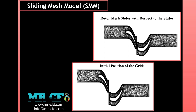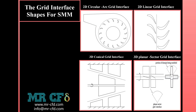The grid interface cannot be on the edge of any part of the rotor or stator. During calculations, the cell zones slide or translate relative to one another along the grid interface in discrete steps. The grid interface and associated interface zones can be any shape, provided that the two interface boundaries are based on the same geometry. Figure 1 shows a linear grid interface and Figure 2 shows a circular arc grid interface. If extruded to 3D, Figure 1 produces a planar/rectangular interface, while Figure 2 produces a cylindrical interface. Figure 3 shows a conical grid interface example.